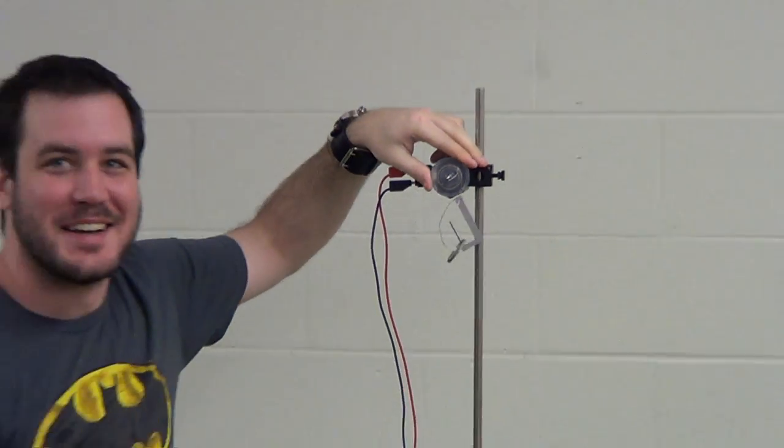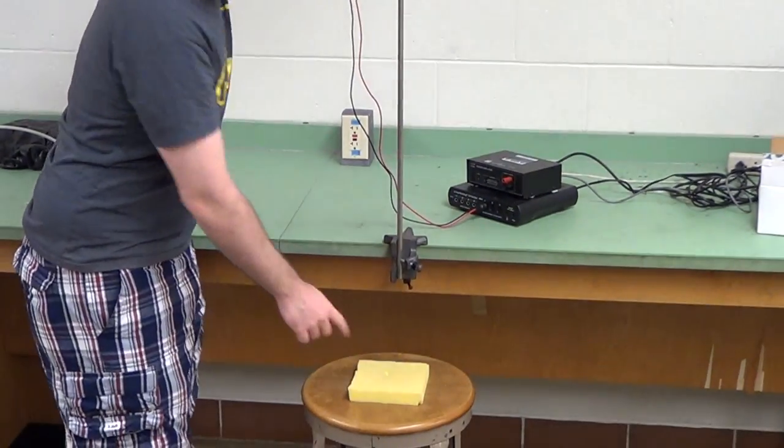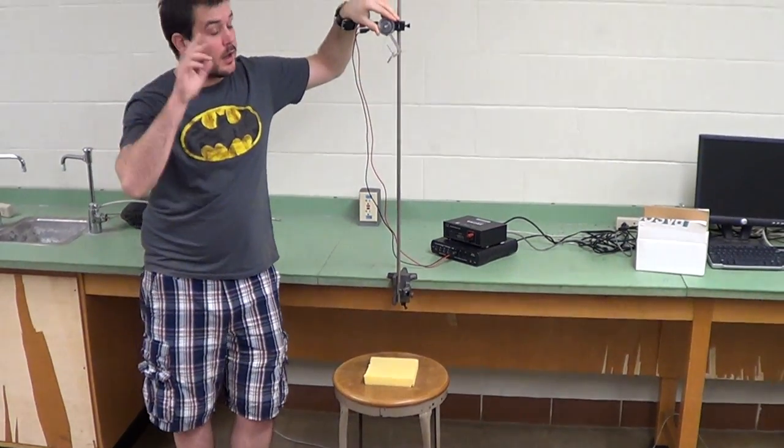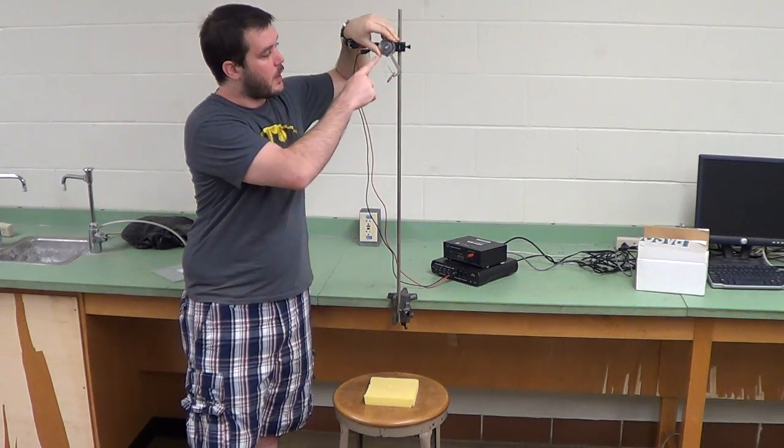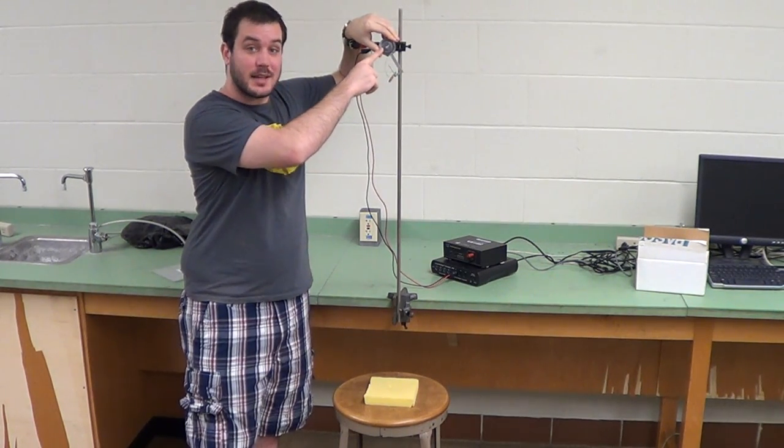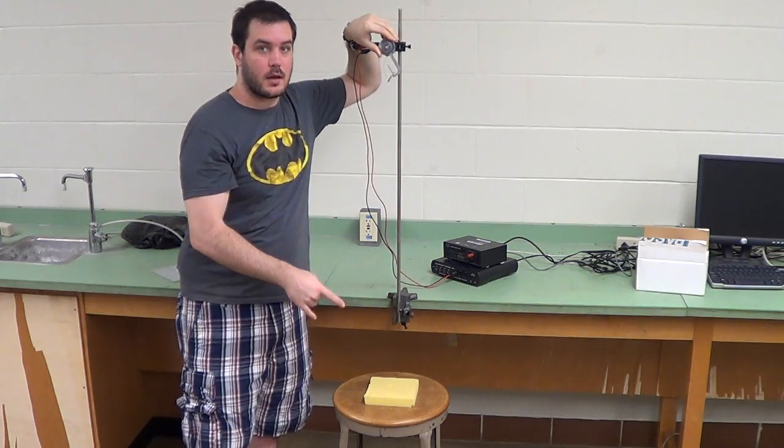Like so. Now we're going to position the stool with a foam pad on it up. Now this is important. When you release the mass, you want to make sure that the string completely disengages from the generator before it hits its target.